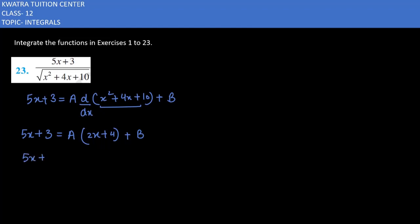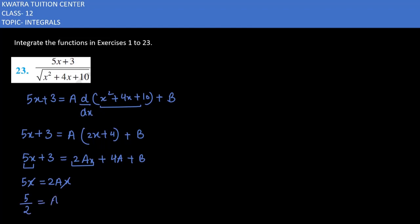Now, equating coefficients on both sides: 5x = 2Ax, so x cancels and we get A = 5/2.